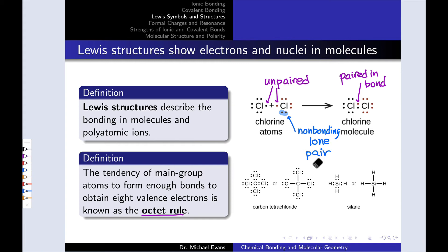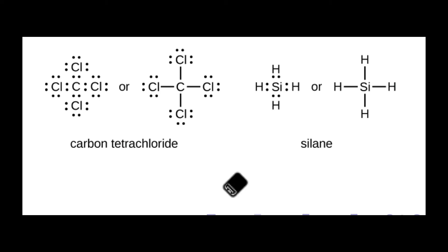If we look, for example, at these two molecules, carbon tetrachloride and silane, we'll see two examples of the octet rule in action. Take a look at the central carbon atom in carbon tetrachloride. It's involved in four single bonds to the four chlorine atoms. That's a total of eight electrons.